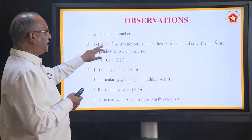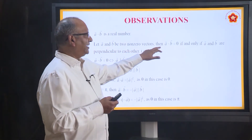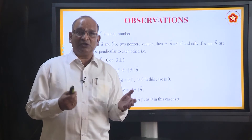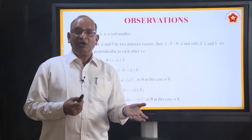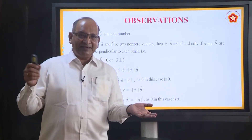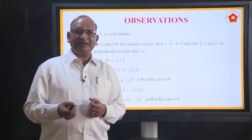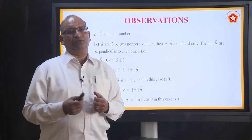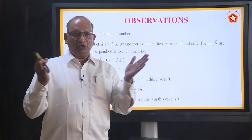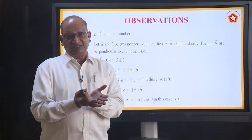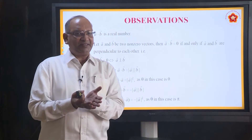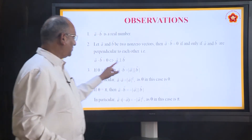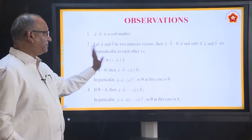Second: if A and B are two nonzero vectors, then A dot B equals zero — they are nonzero vectors, but suppose the product comes zero. When will it happen? When theta is 90 degrees. Why? Because cos 90 degrees is equal to zero. Means: if both the vectors are perpendicular to each other, the angle between them is 90 degrees. As a result, A dot B will be zero. So A is perpendicular to B.